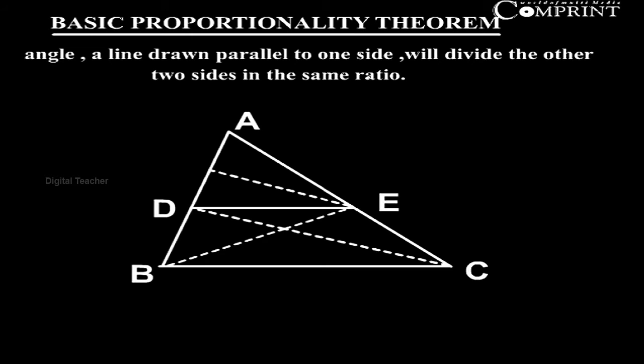Basic Proportionality Theorem, also known as Thales Theorem. In a triangle, a line drawn parallel to one side will divide the other two sides in the same ratio.